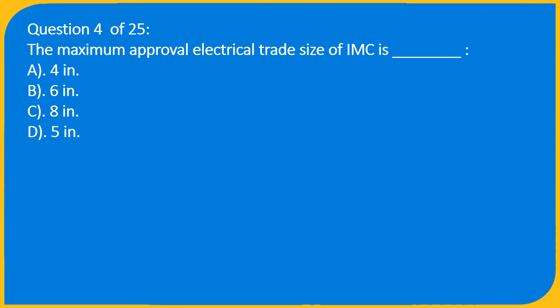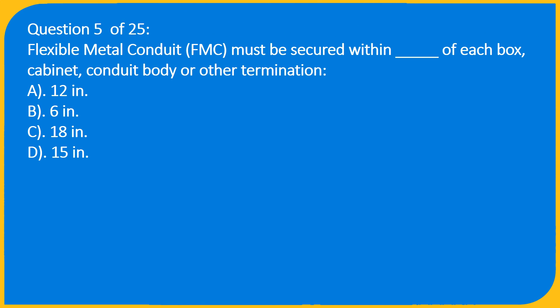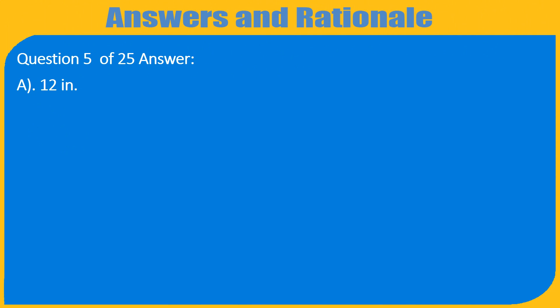Question 4 of 25: Flexible metal conduit (FMC) must be secured within how many inches of each box, cabinet, conduit body, or other termination? A. 12 inches, B. 6 inches, C. 18 inches, D. 15 inches. Answer: A. 12 inches.